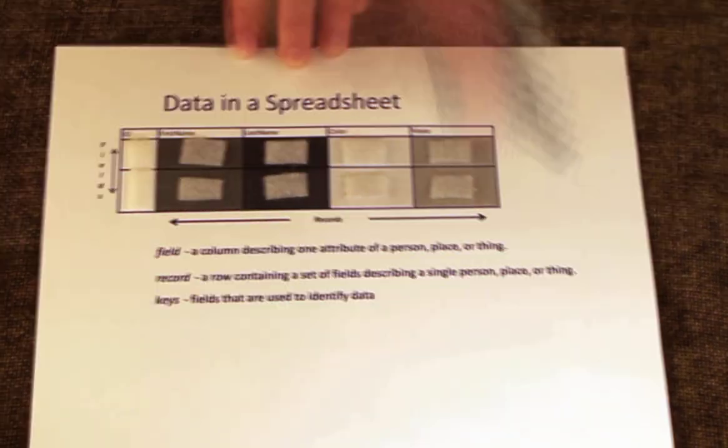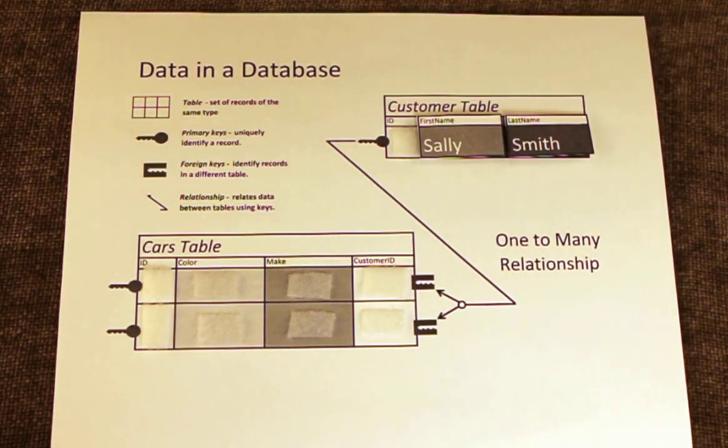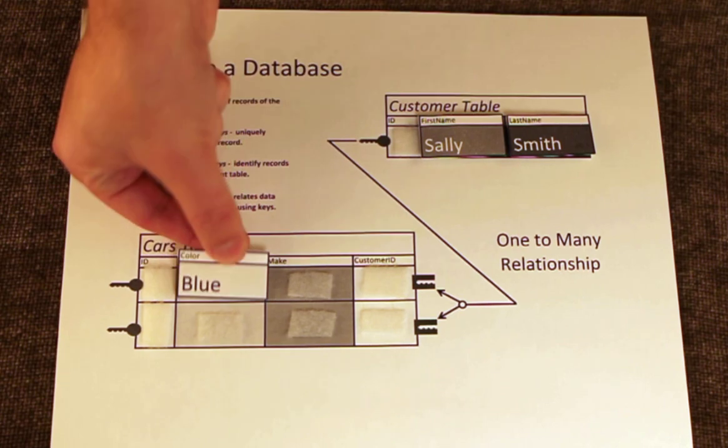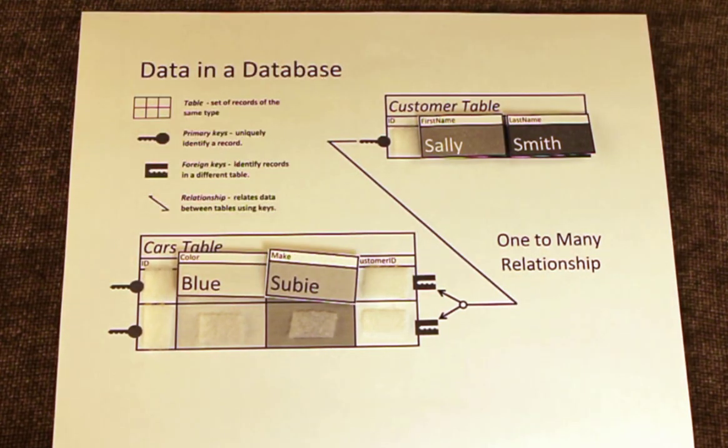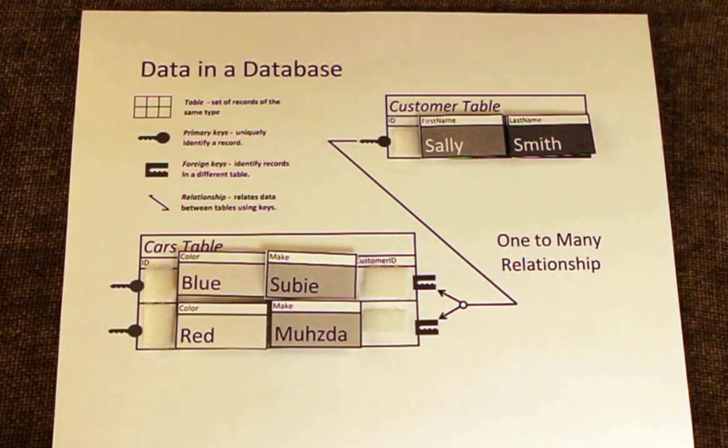A relational database solves this problem by splitting different kinds of data into sets called tables. One table is storing data about cars, while the other table is storing data about customers.